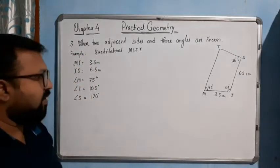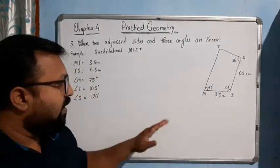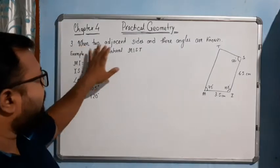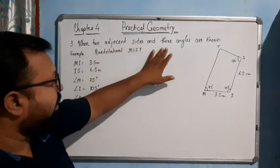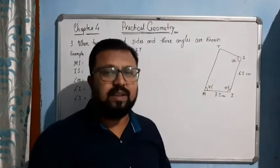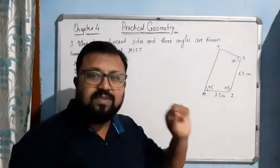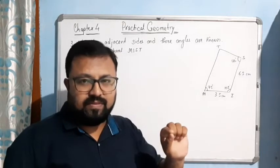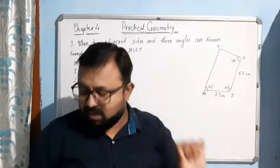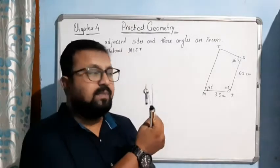Now we have to construct the quadrilateral. Remember: when constructing angles, those angles which are multiples of 7.5 degrees can be constructed with the help of a compass.